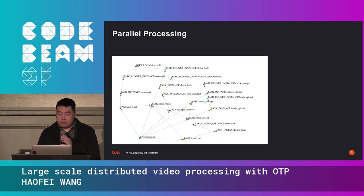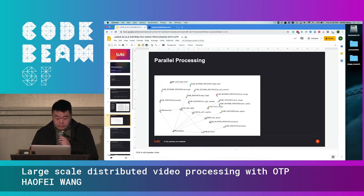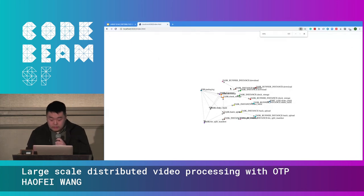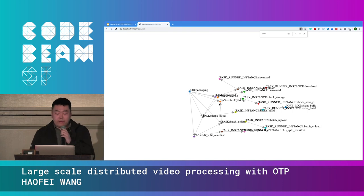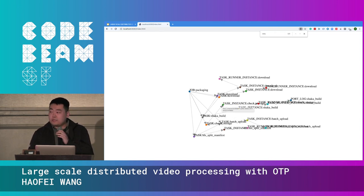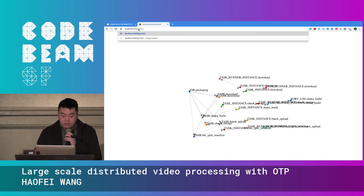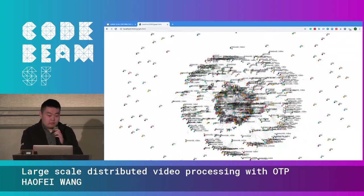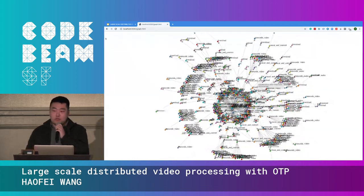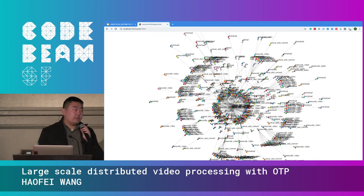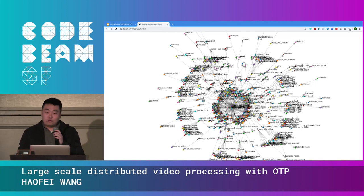Let me show an example. Here is a simple example of one video breaking into several different tasks with dependencies. For a more complex example, just to transcode one video, we break it down — I believe we have 681 tasks here — and throw all of those tasks into a cluster. That's how we process video in the cluster.